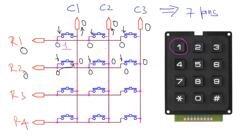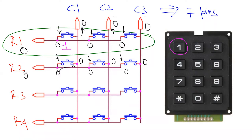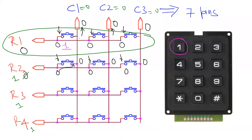What do we mean by keypad scanning? We put a known logic — say a zero — on row 1, and then check the values of C1, C2, and C3 to see which of those inputs has the same logic. If C1 has a value of zero, that particular key at row 1, column 1 is pressed. If C2 is zero, the key at column 2 is pressed. If C3 is zero, the key at column 3 is pressed. When one row is set to zero, all other rows must be set to one so we can uniquely identify which key is pressed.